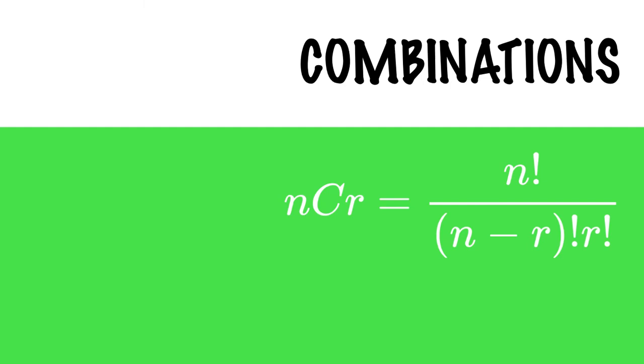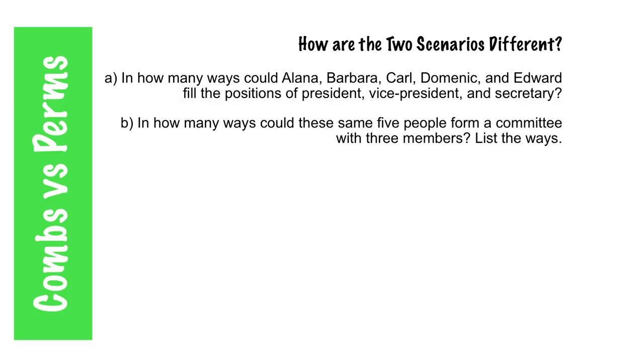An introduction to combinations. How are these two scenarios different? In Part A, the first situation, in how many ways could Alana, Barbara, Carl, Dominic, and Edward be chosen for President, Vice President, and Secretary?